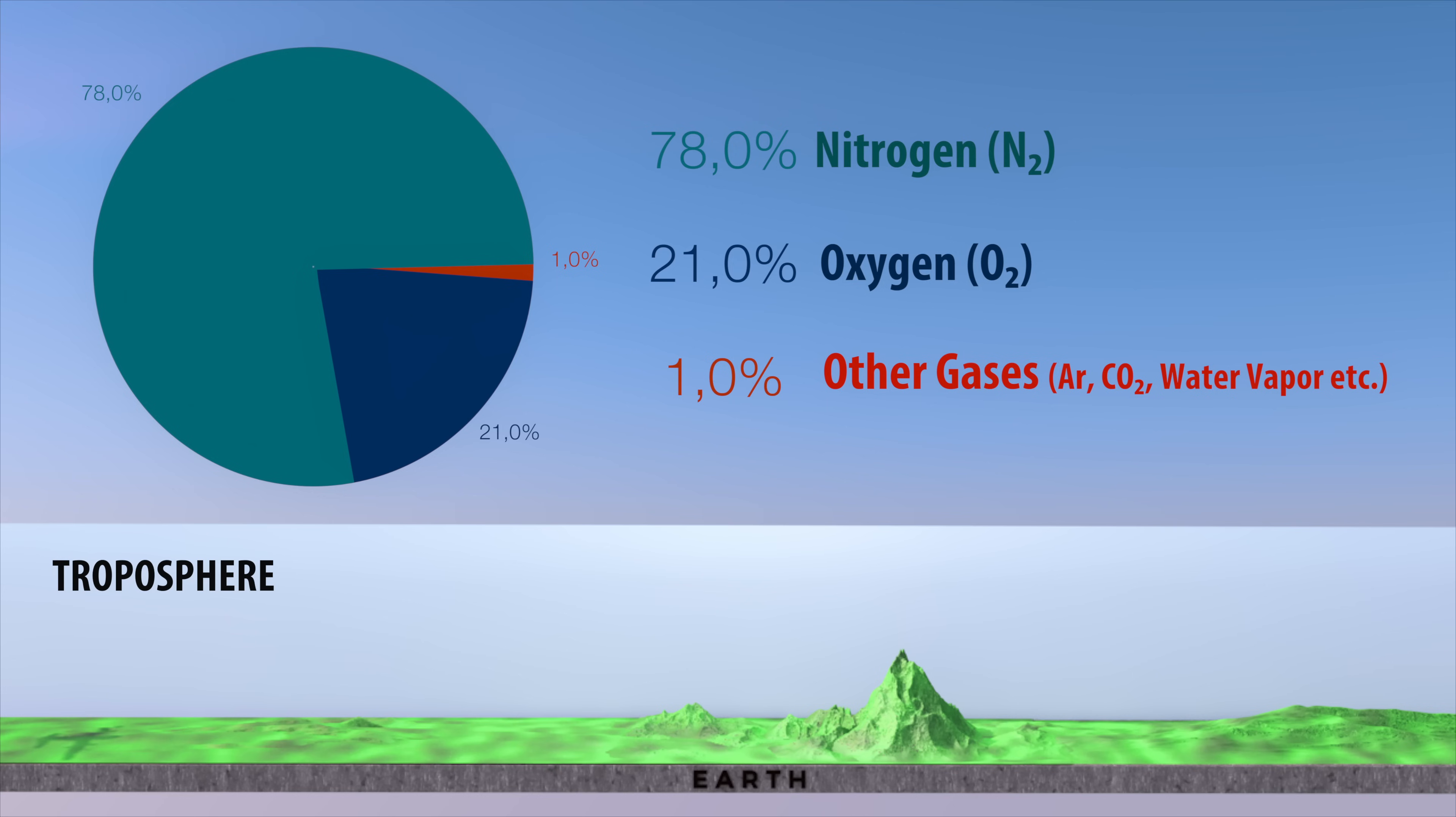In this layer, air is made up of approximately 78% nitrogen (N₂), 21% oxygen (O₂), and 1% argon, with small amounts of additional gases including water vapor and carbon dioxide.